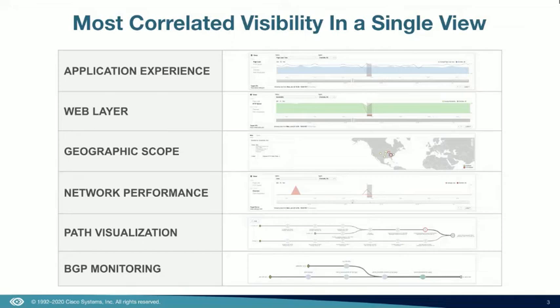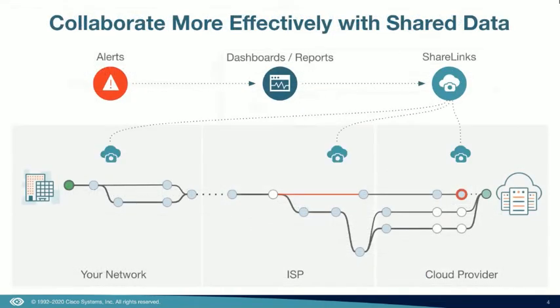And last, BGP monitoring — understanding peering relationships across the Internet. This can be extremely valuable when events like Internet outages occur, to understand both the impact on your service and business, as well as have the information needed to make decisions to potentially minimize impact and route around an issue. All of this helps companies run a better business by assuring service availability, ensuring employee productivity, and enabling rapid identification and resolution of issues in real time.